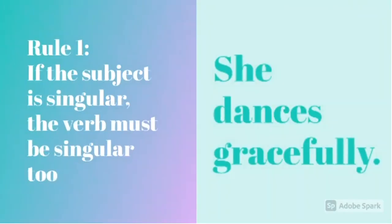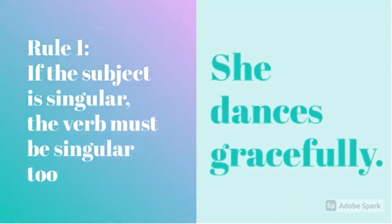Rule 1 is, if the subject is singular, the verb must be singular too. An example is, she dances gracefully. Here, she and dances are both singular.